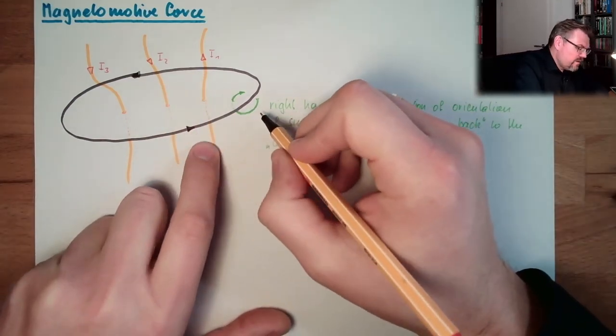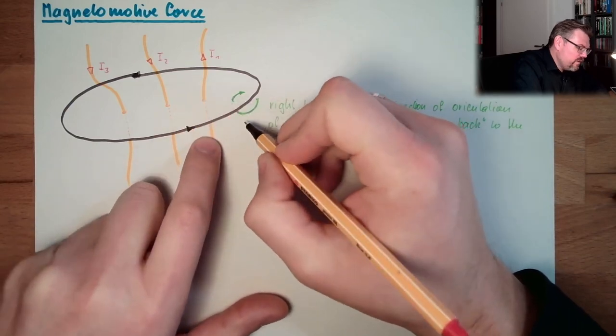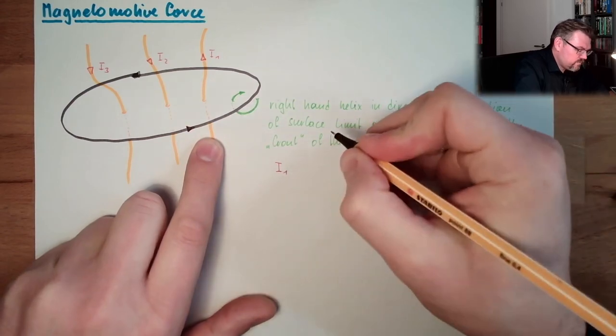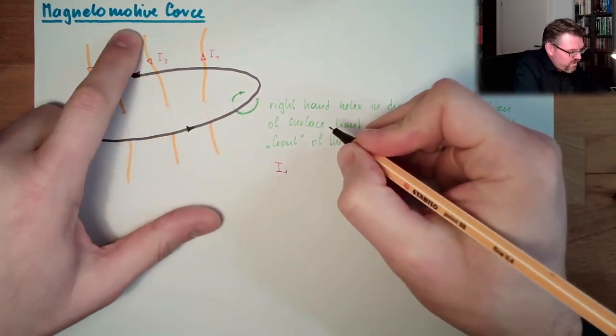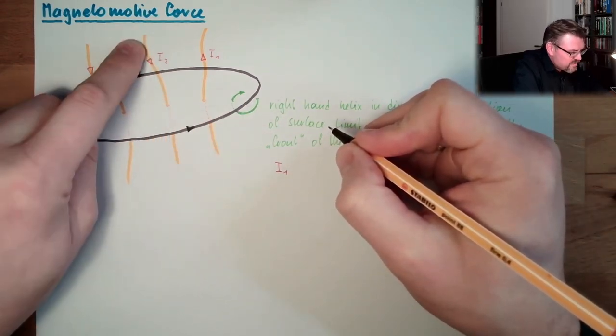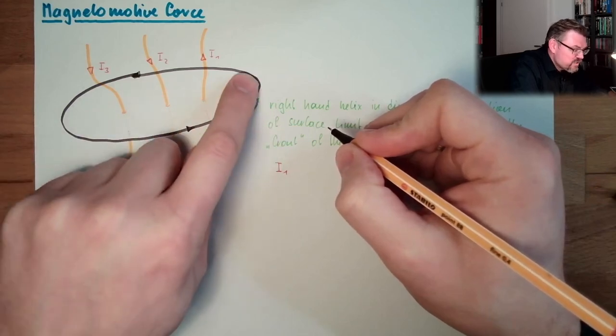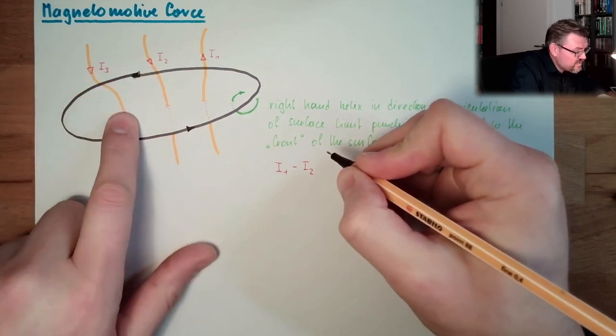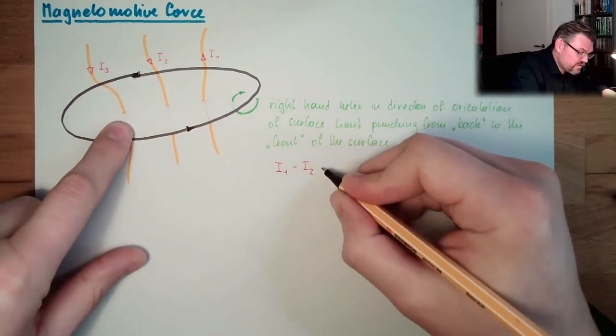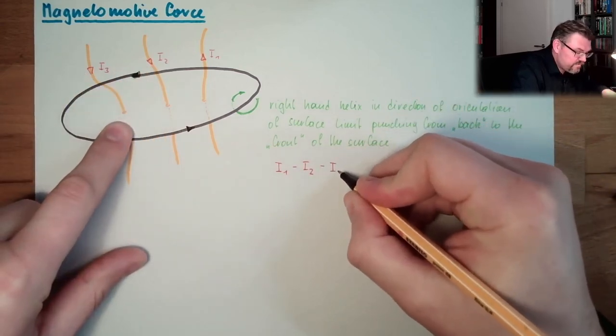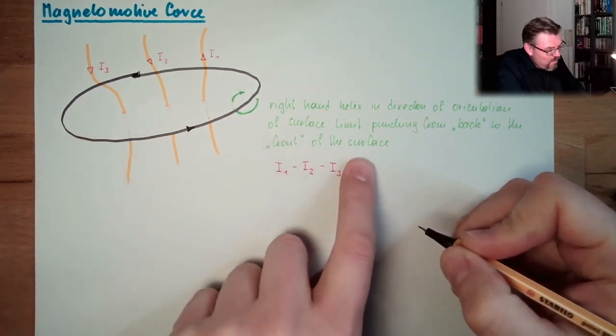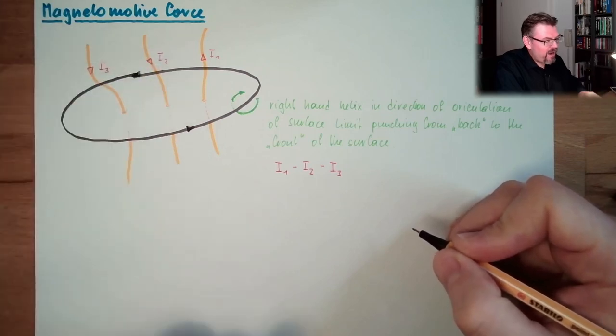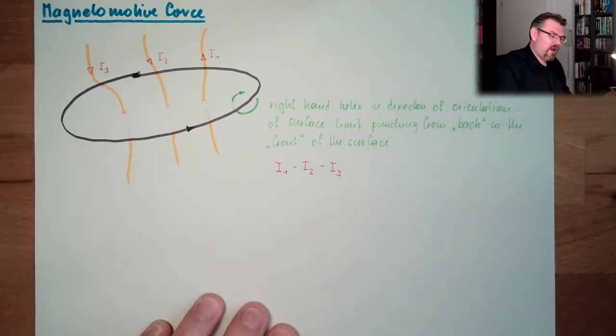Now I can summarize all those currents. Here I1 is going from back to the front, so I1 is positive. I2 is going from the front to the back, because it's punching in a different direction, so it's minus I2. I3 is also punching in a different direction, so it's also minus I3. And the sum of all those currents which are passing through are called theta.